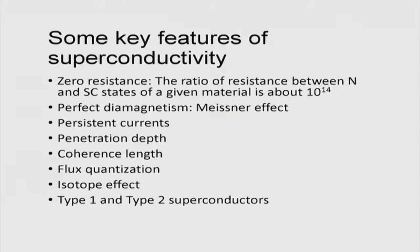We generally classify superconductors as type 1 or type 2, or as conventional and high-Tc superconductors — type 1 versus type 2 falls in that category. One of the key features of superconductivity in general is that resistivity is essentially zero. The ratio of resistance between normal and superconducting states is something like 10 to the power of 14.